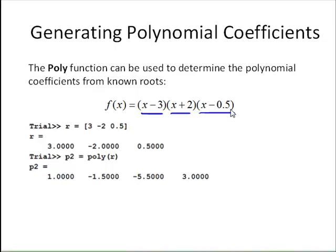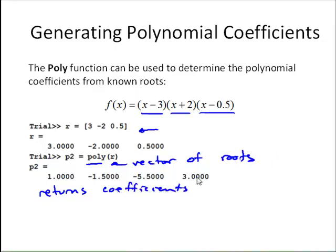If we define that vector here in the vector r, we can use the poly function. Now r is a vector of the roots of the polynomial, and the poly function returns the coefficients. So again, this means that the polynomial now, f of x, is the same one we've been working with: x cubed minus 1.5 x squared minus 5.5 x plus 3.